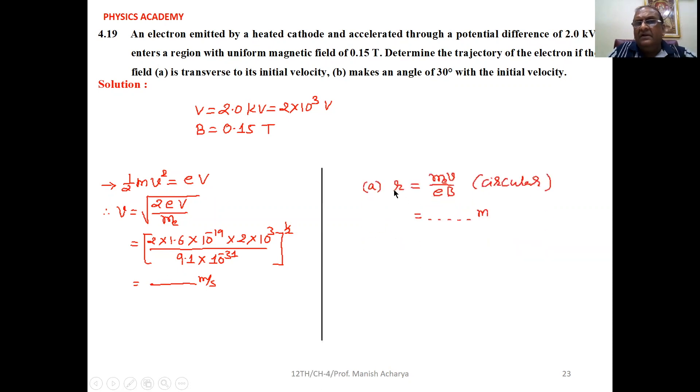In the first case, the particle executes circular motion and the radius of its circular path is given by m_e v upon eB. Substitute mass of electron, the speed which we calculated, charge of electron, and B equals 0.15 Tesla. Then solve it, you will get the radius of the circular path.